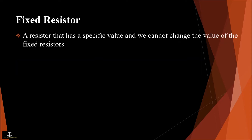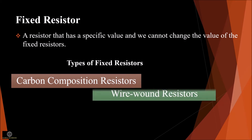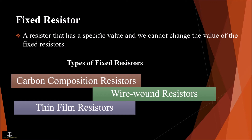A fixed resistor is a resistor that has a specific value — a particular value that we cannot change. Types of fixed resistors are carbon composition resistors, wire wound resistors, thin film resistors, and thick film resistors.